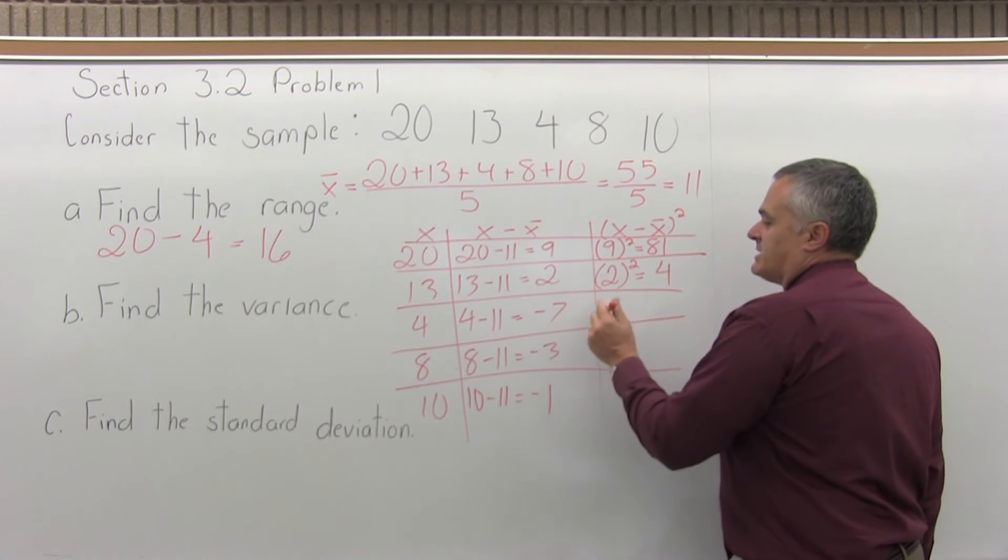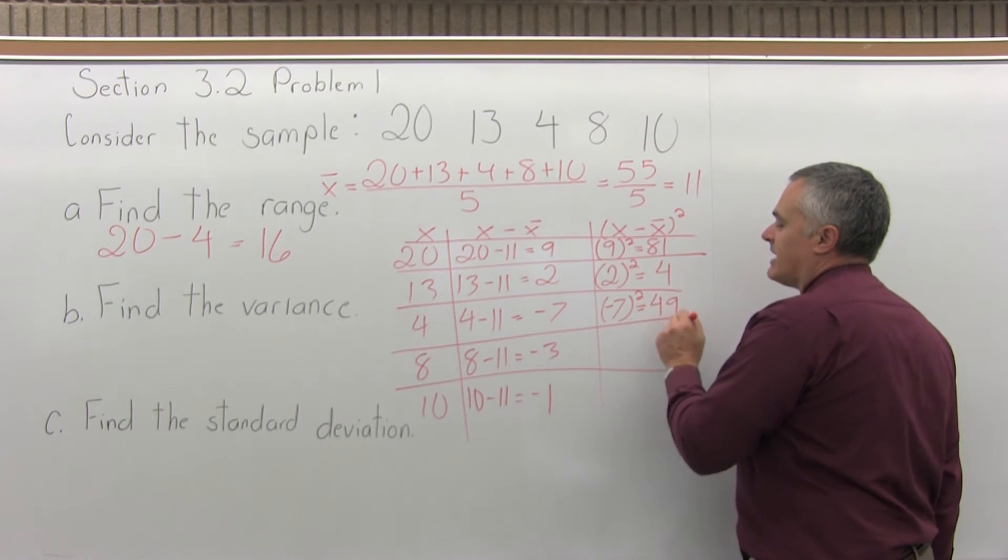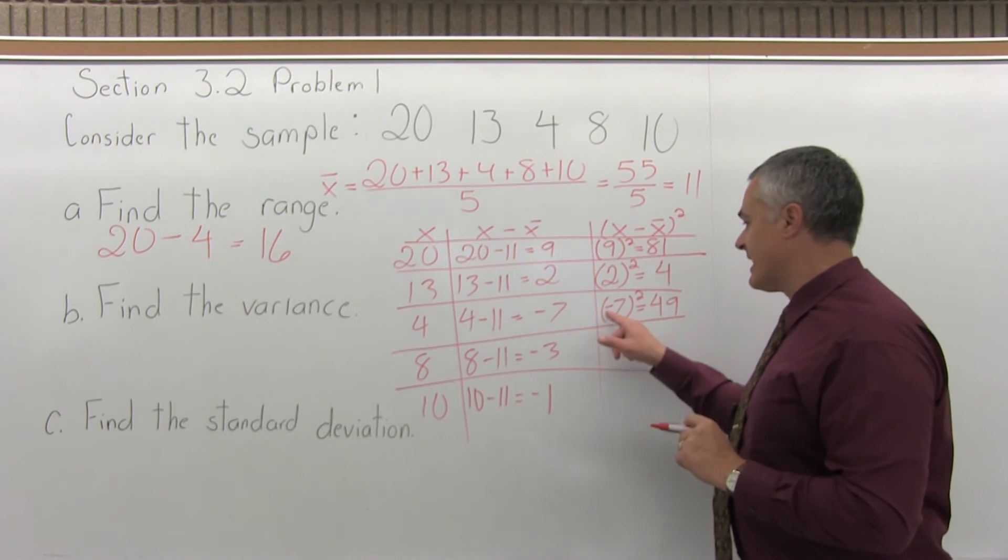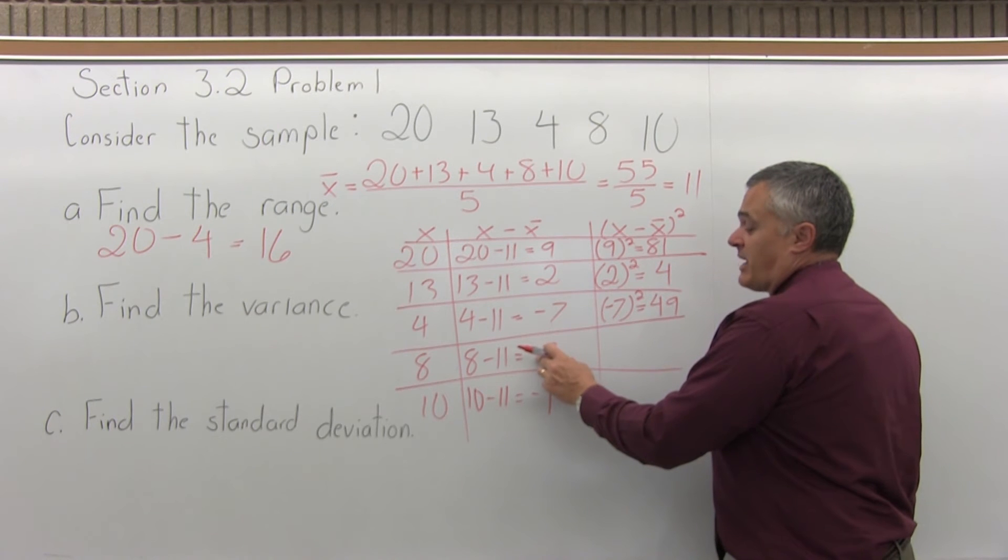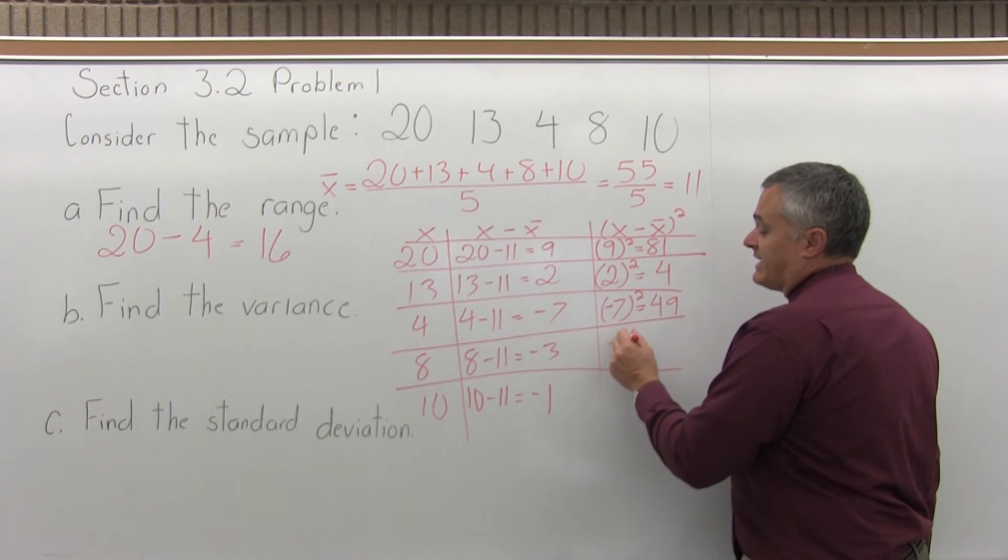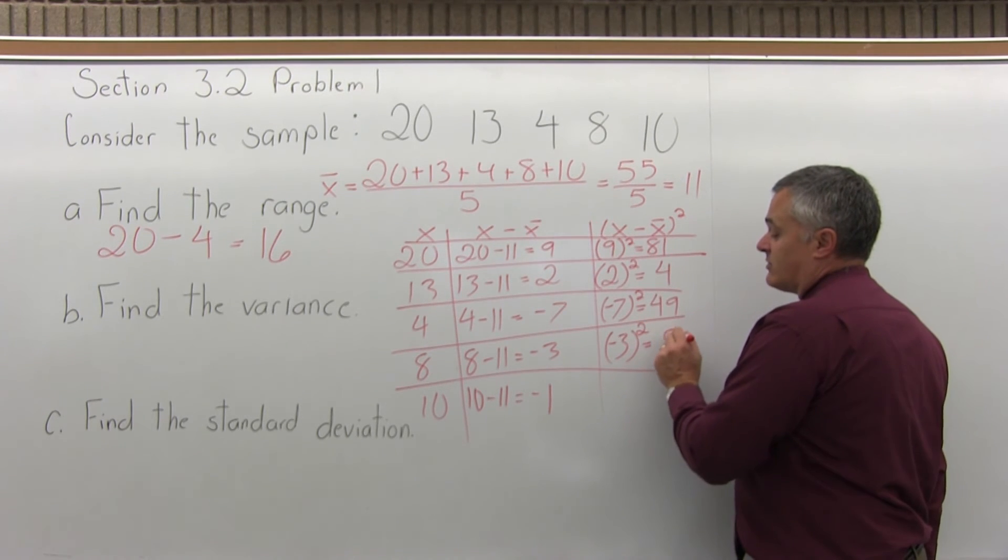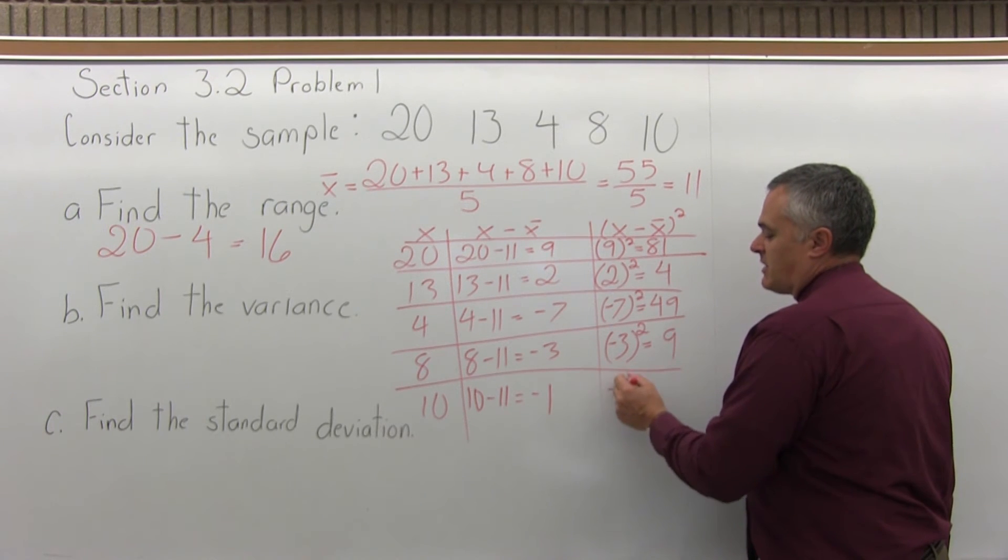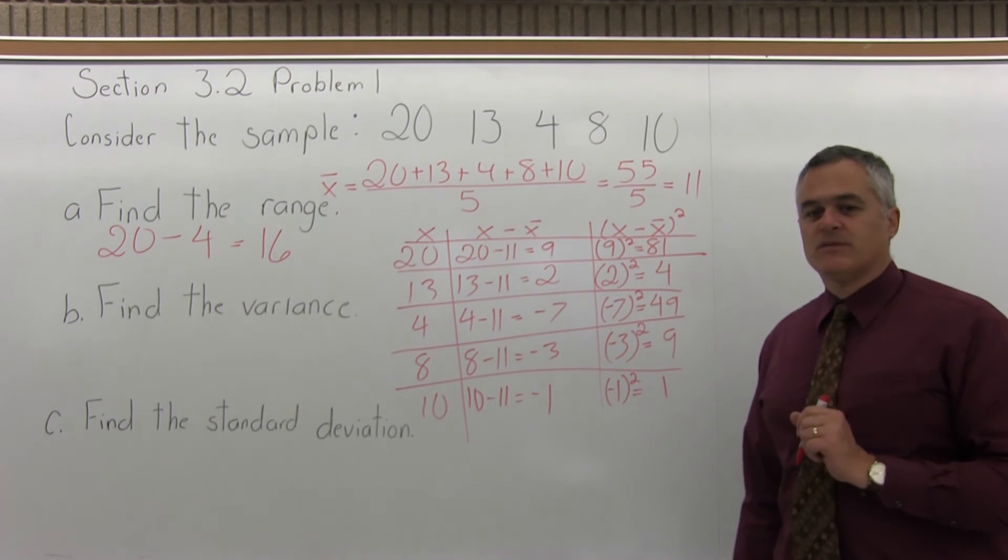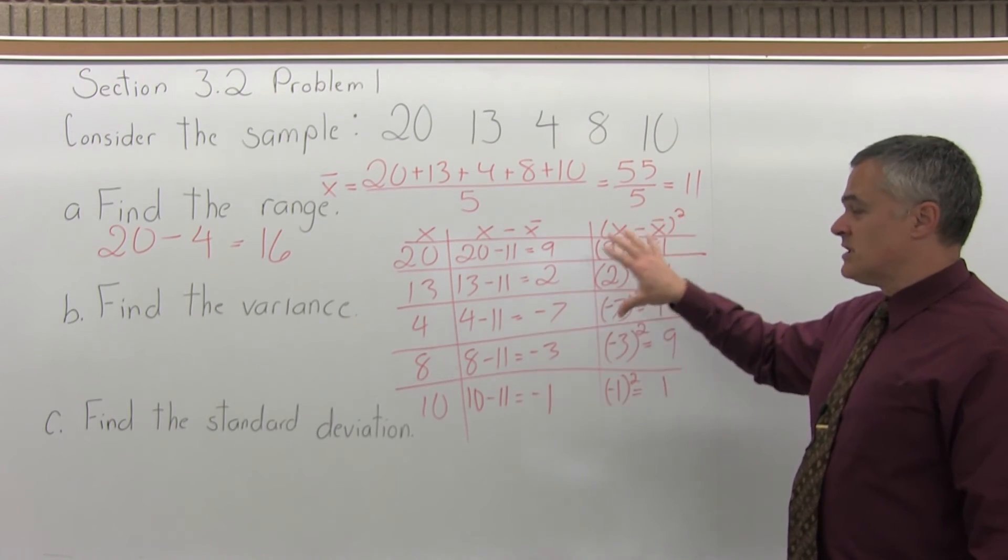In the middle row, the x minus x-bar was negative 7, so I'll have negative 7 to the second power. Negative 7 times negative 7 is positive 49. Again, the negative times negative, the negatives cancel. The next row down, my answer for x minus x-bar was negative 3, so I'll do negative 3 to the second power. Negative 3 times negative 3 is positive 9. And finally, in the bottom row, the answer for x minus x-bar was negative 1, so I'll raise that to the second power. Negative 1 times negative 1, positive 1. So here's the result for step 2. Step 2 is fill in the chart. There's the chart that's filled in.